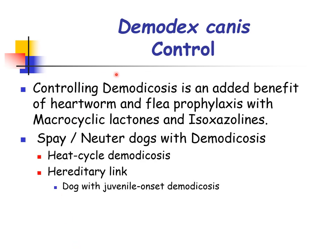The control of demodicosis is an added benefit for heartworm and flea prophylaxis with macrocyclic lactones and isoxazolines. Spay/neuter can also be considered, since immunosuppression can be due to stress and the heat cycle is a stress factor. Some dogs are more predisposed to juvenile onset demodicosis due to an immunological defect that is hereditary in nature.